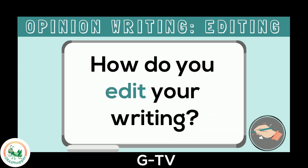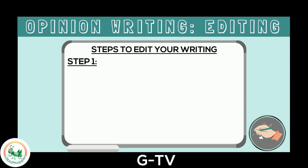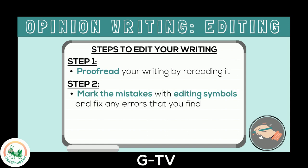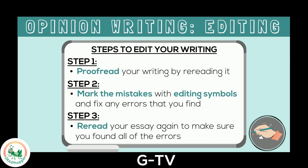How do you edit your writing? Here are the steps to editing. Step 1: Proofread your writing by rereading it. Step 2: Mark mistakes with editing symbols and fix any errors that you find. Step 3: Reread your essay again to make sure you found all the errors and that your essay still flows with the changes you made.